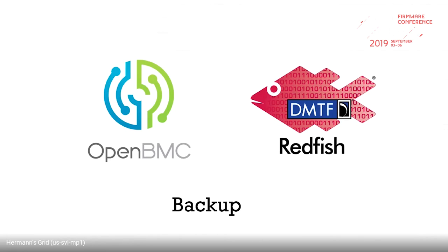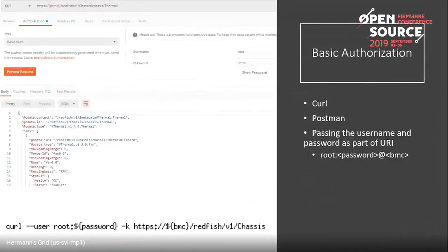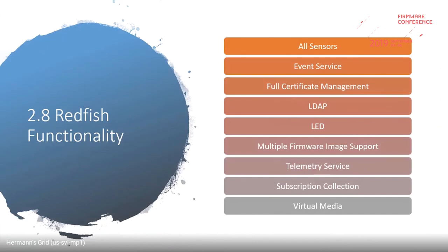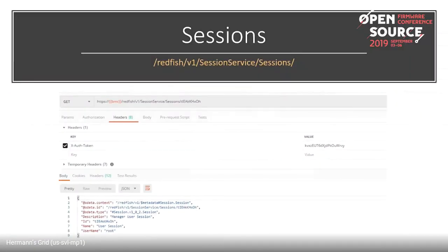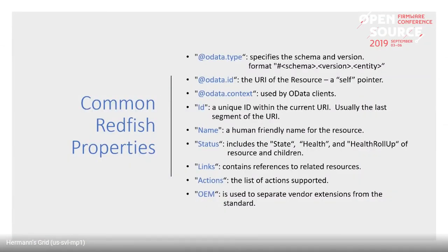Question: In version 2.7, you mentioned firmware update — does the multiple image firmware update include the host firmware or the BMC? It includes both. Regarding common properties: OData.id, OData.type, and OData.context are mandatory. Most properties in Redfish are optional.